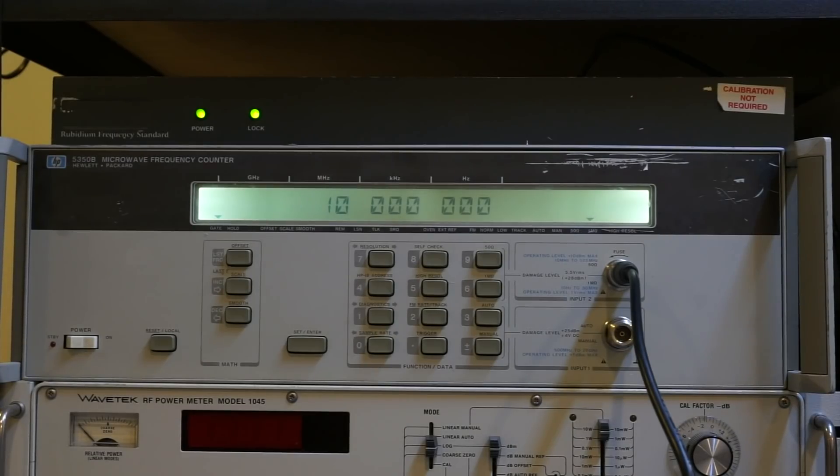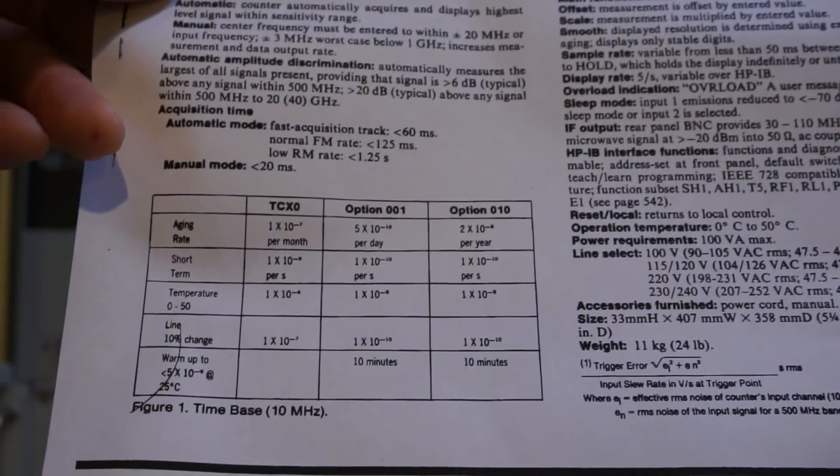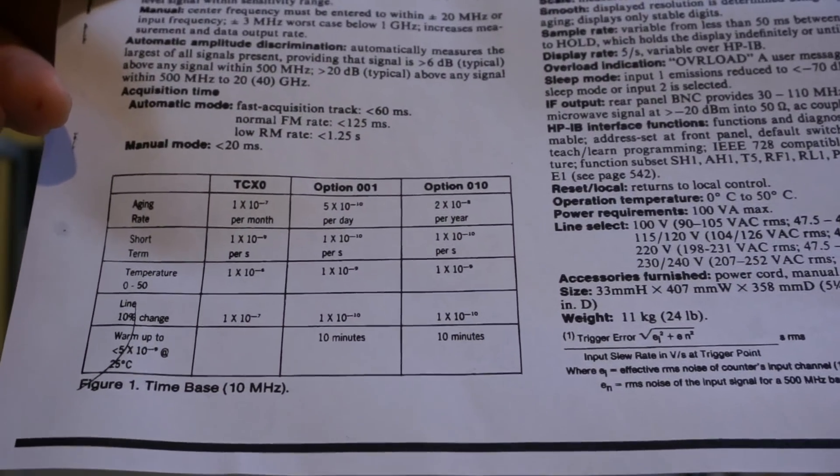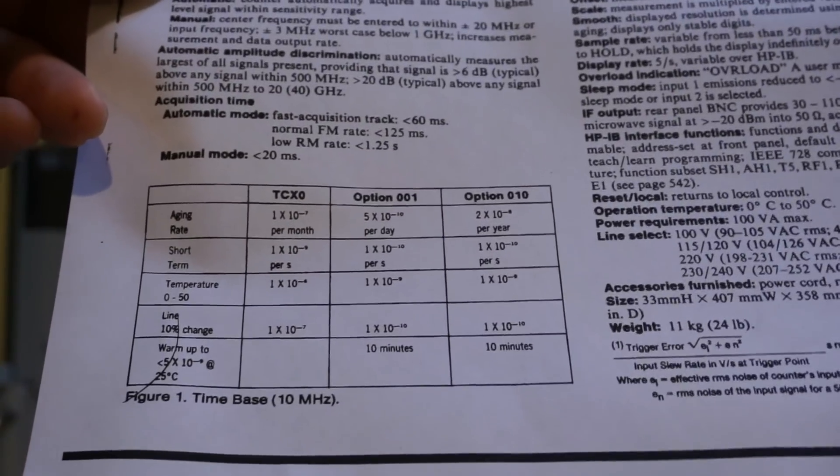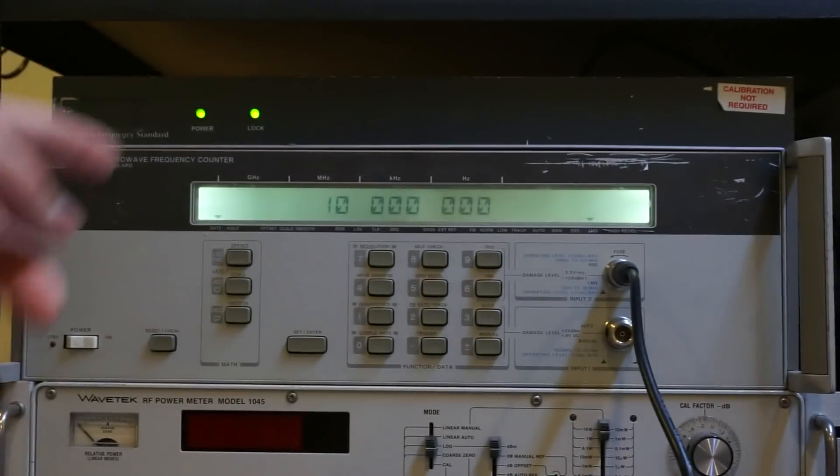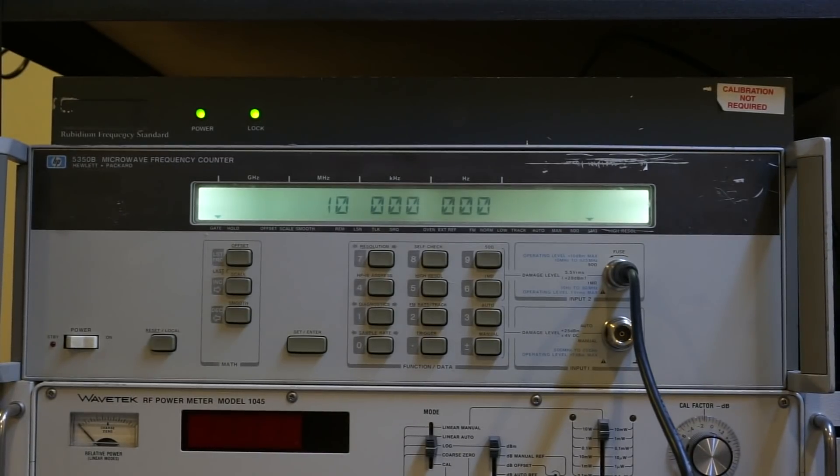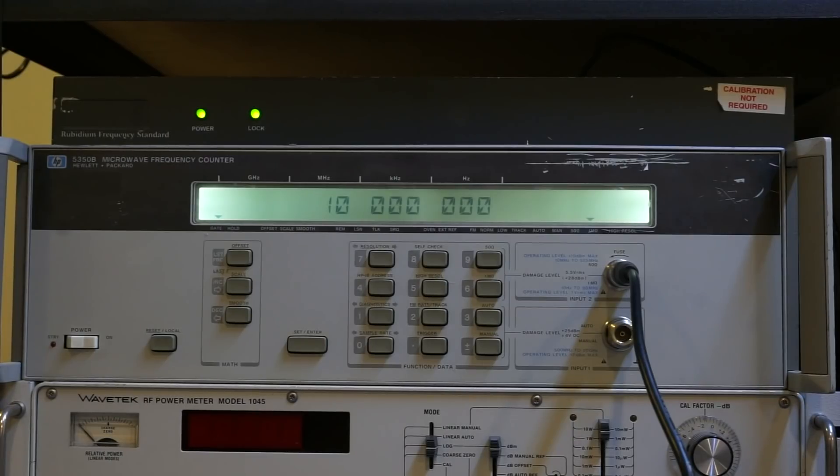And the result is still 10 MHz, which is actually not surprising. Because, as what I will show you in the datasheet, you will see that the drift for the crystal with option 001 is 10 to the minus 10. So which means that we are only here to be able to detect minus 6. And so, anywhere when it drifted within that margin, you won't be able to detect. That's why we're still seeing 10 MHz spot on.